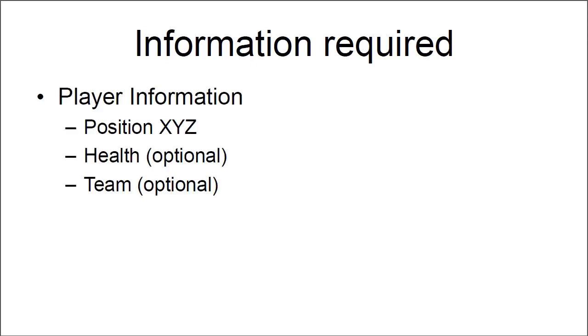First of all, let's look at the information we need to draw ESP. Regardless of whether we are using DirectX or OpenGL, and if we are internal or hooking the engine, or drawing on a panel — what we need exactly is the player information, which is simply position XYZ in the game. Probably health for something like a health bar, or not displaying dead bodies. And also team, to decide whether we want to display team members or enemies only.